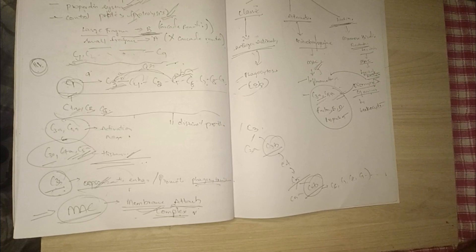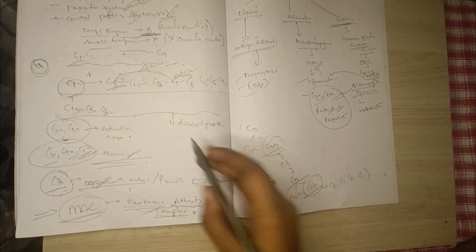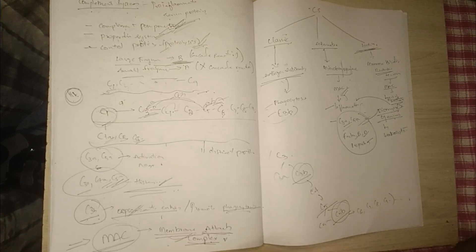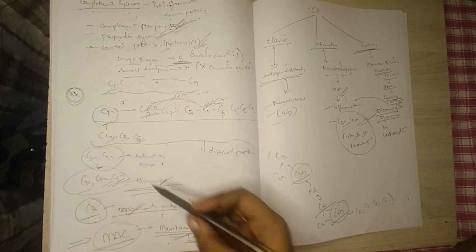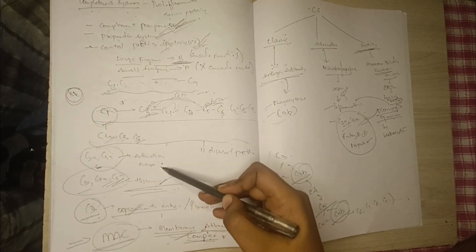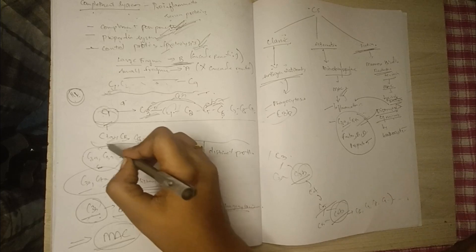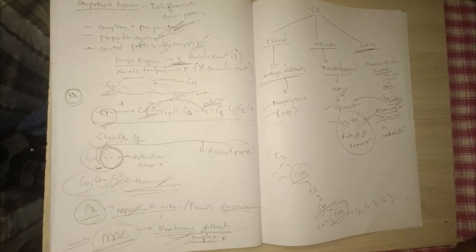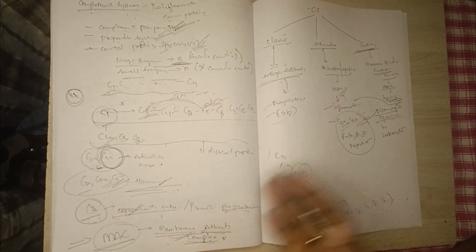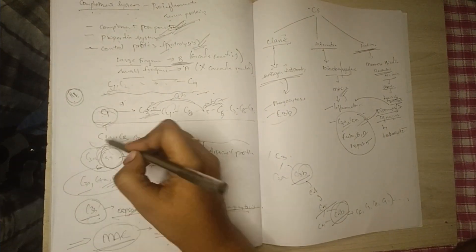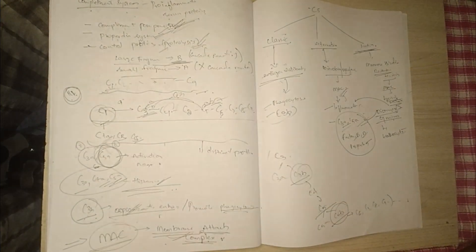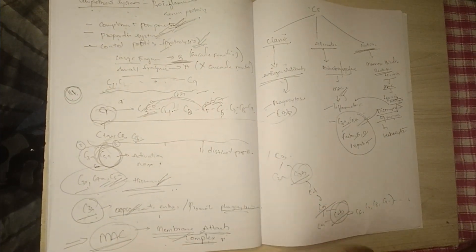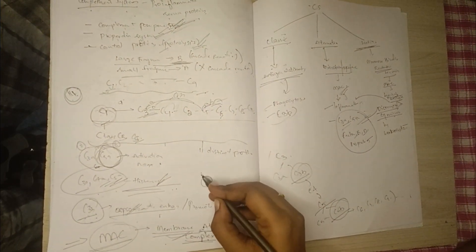Through proteolysis, further complement proteins are formed, and their main action is supporting the process of inflammation through vascular and cellular events. C3a and C5a help in activation and degranulation of mast cells. Notably, C5a is the most powerful complement component, followed by C3a as the second most powerful. C3a, C4a, and C5a all help in histamine release, causing vasodilation and increased vascular permeability.